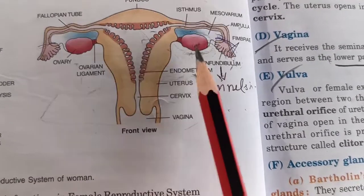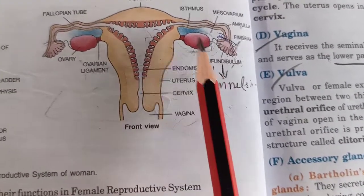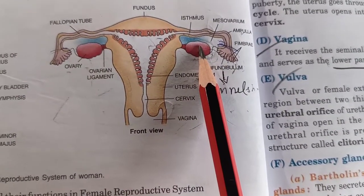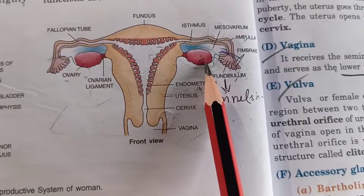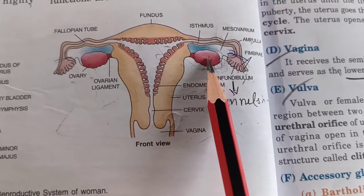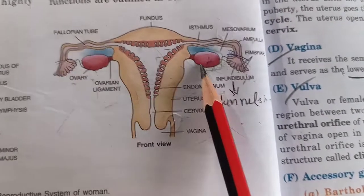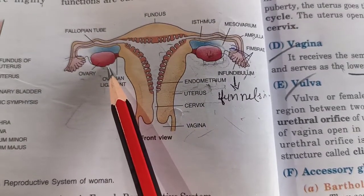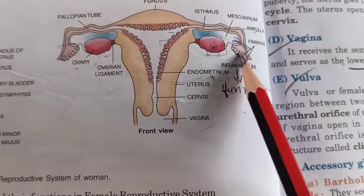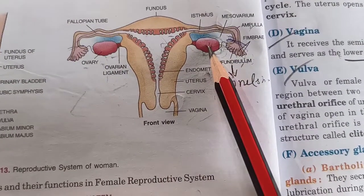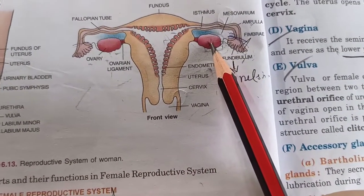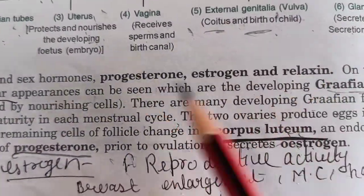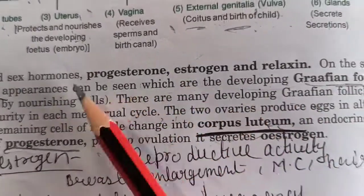Eggs are produced in the ovaries. Since there are two ovaries, they do not both produce eggs at the same time — they produce eggs in alternate months. So if the right ovary produces an egg this month, the left ovary will produce one next month. The ovary's function is to produce eggs and sex hormones. The sex hormones are progesterone, estrogen, and relaxin — these are the three female sex hormones.